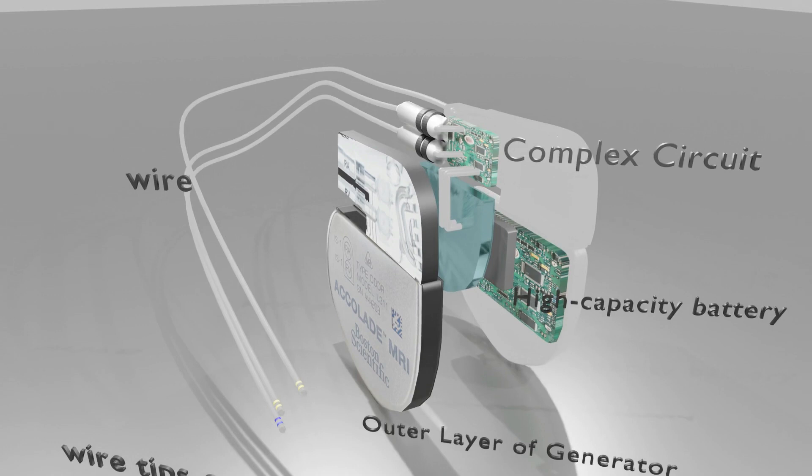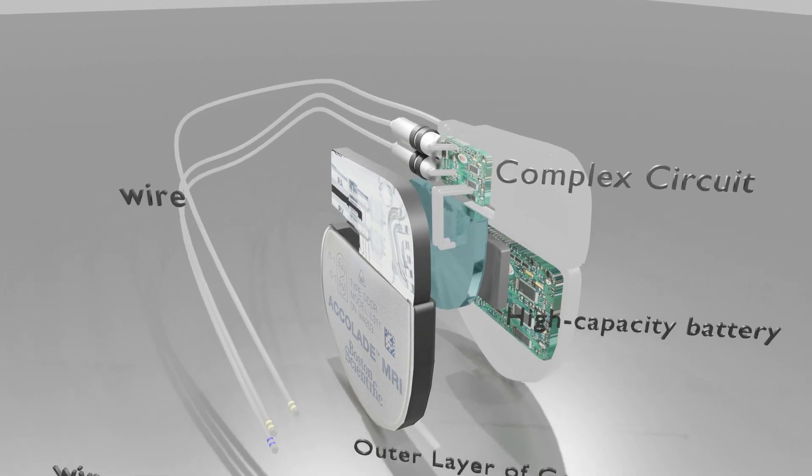The third component is the battery. Each ICD has a battery whose lifetime is dependent on how much pacing and defibrillating the device is called upon to perform. Typical longevities fall between about four to seven years.